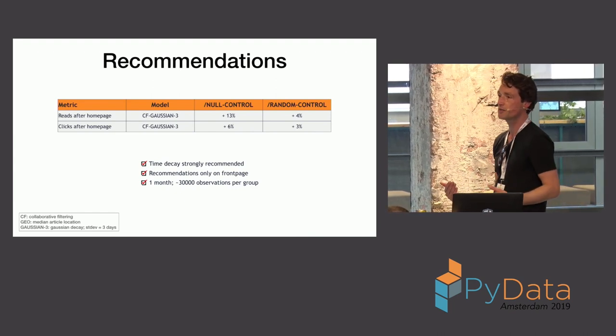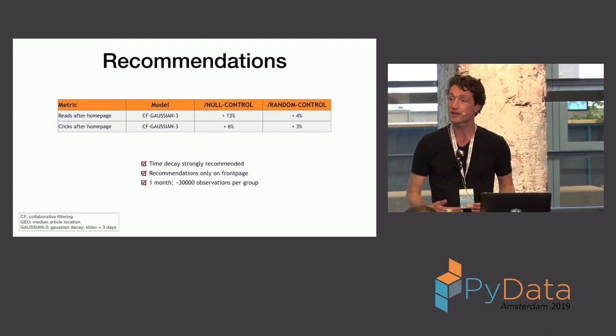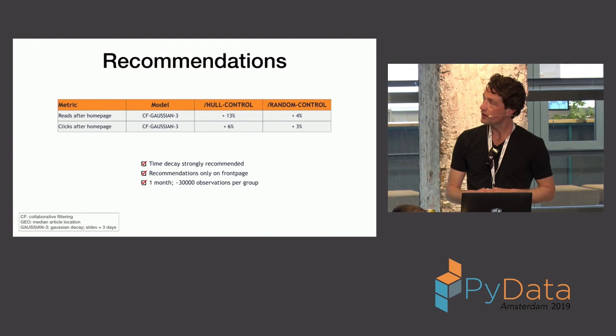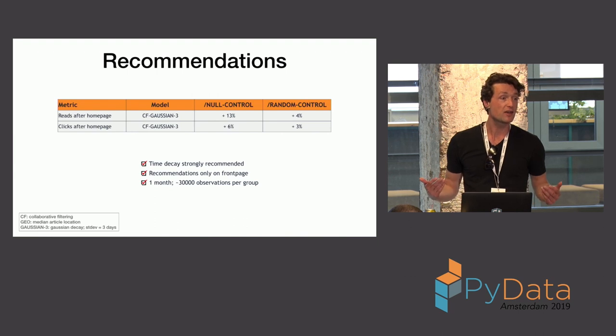We have a null control group. So, that's a group of people who don't get any recommendations. And we have a random control group that gets, well, random recommendations, of course. And what we see is, you know, if you have, if you have random recommendations, that already improves over not having any recommendations.